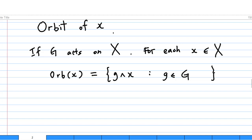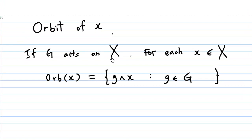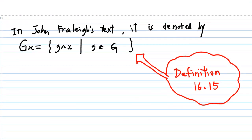What is the orbit of X? If G acts on a set X, then for each element x in the set X, the orbit of x is equal to the set consisting of g·x for all g inside the group G. In John Fairline's text, it is denoted by G·x, consisting of all the g·x for all elements g in the group G.